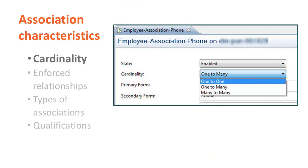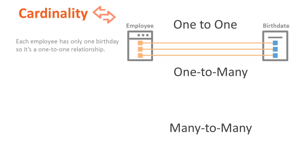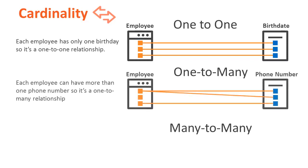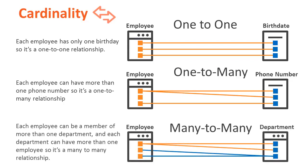Let's explore the cardinality of an association. An association object in BMC Remedy AR System can have three types of cardinality options: one-to-one, one-to-many, and many-to-many. One-to-one cardinality implies a singular mapping — for example, each employee can have only one birth date. One-to-many cardinality implies a single-to-multiple mapping — for example, each employee can have zero, one, or more contact numbers. An employee can be part of more than one department, and each department can have more than one employee; this illustrates many-to-many cardinality.